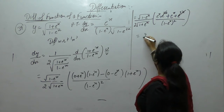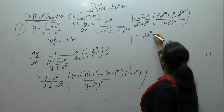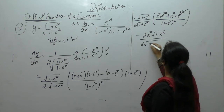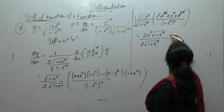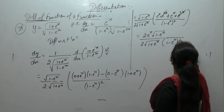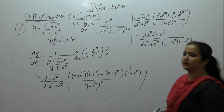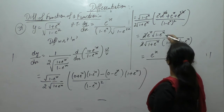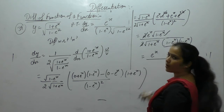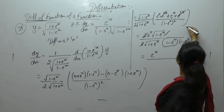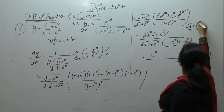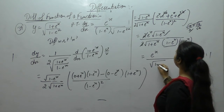Terms cancel, leaving 2eˣ over (1 minus eˣ) times 2(1 plus eˣ) times (1 minus eˣ)². We can simplify: 2 gets cancelled, giving eˣ. Using the property √a upon a equals 1 over √a by rationalizing, we get 1 over √a.